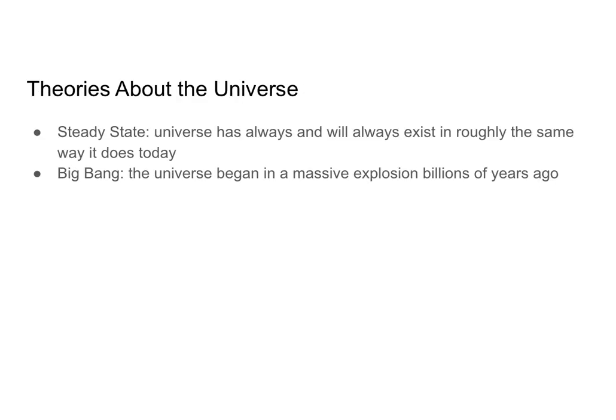In the early 1900s, the prevailing theory about the universe's history was that the universe was in a steady state. It had always and would always exist in roughly the same way it did at the time — the universe wasn't expanding, the universe wasn't contracting, there had always been galaxies, there had always been stars, and always would be galaxies and stars. The steady state theory was so fundamental to physicists' understanding of cosmology at the time, that when Albert Einstein first came up with his theory of general relativity,